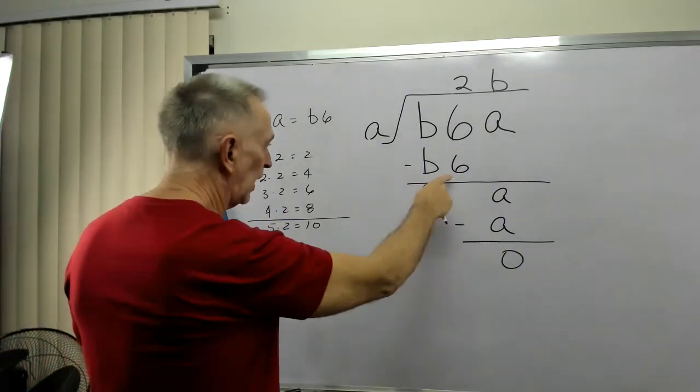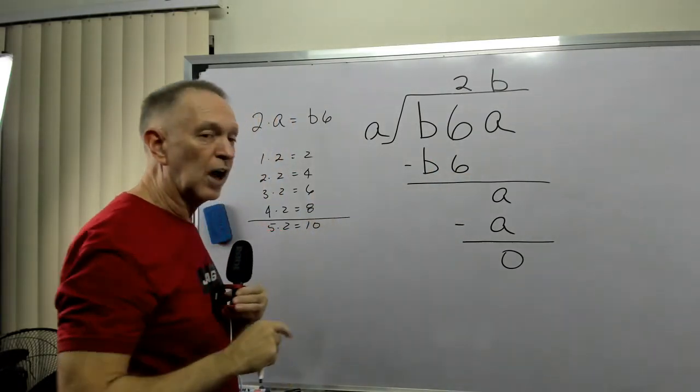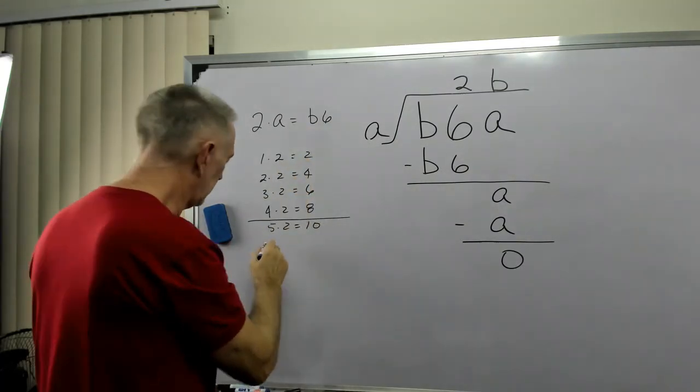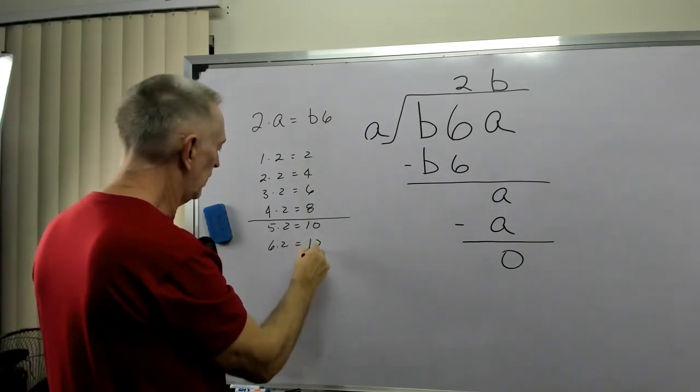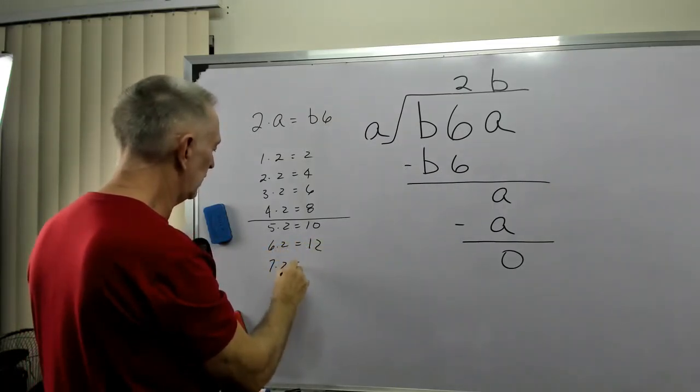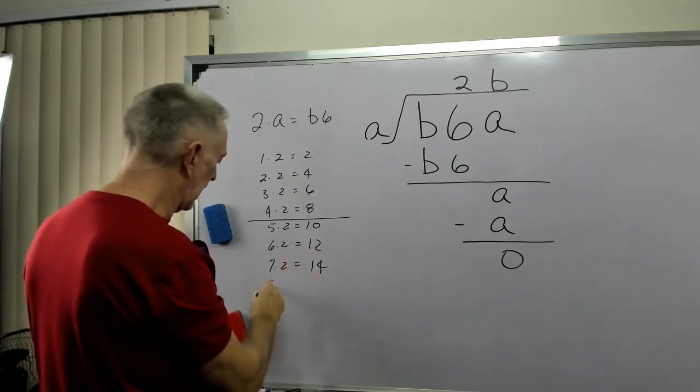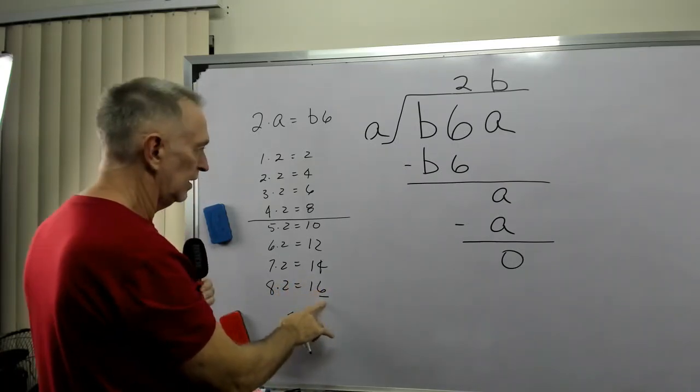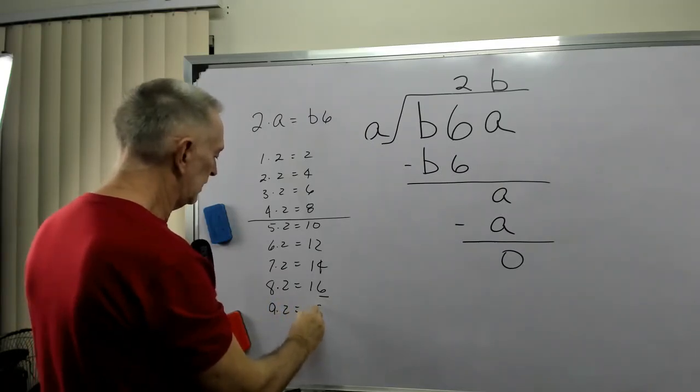It also has to give me the digit in the ones column a 6. Well, let's keep going. 6 times 2 equals 12, 7 times 2 equals 14. None of those are a 6. 8 times 2 equals 16. 9 times 2 equals 18.